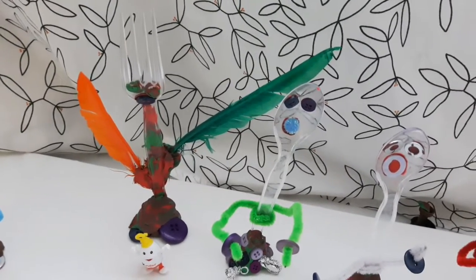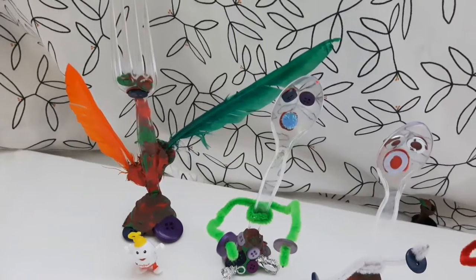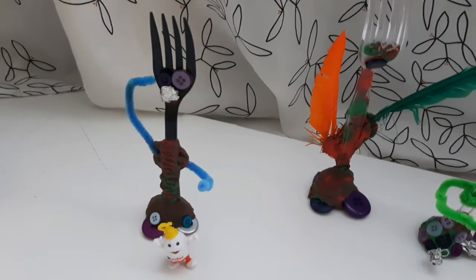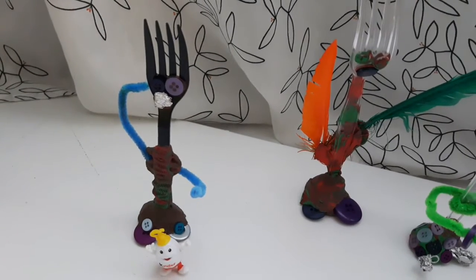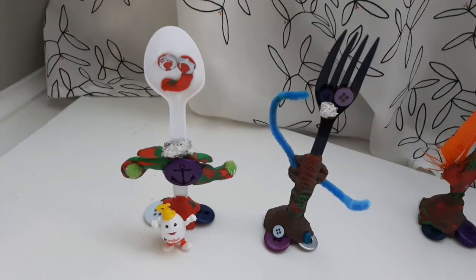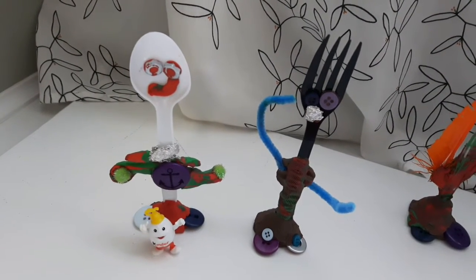This is Forky's dad, who's also competing with Spoonie's dad. This is Forky's mom, who's a judge. This is Spoonie's mom, who's a judge with Forky's mom.